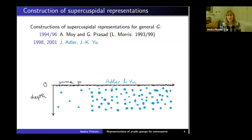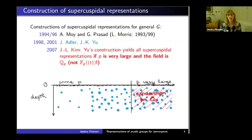People are interested in knowing when Yu's construction provides us all representations. Then we can prove results about Yu's representations, which have a nice recipe to write them down. Ju-Lee Kim proved that if the prime is very large, then we get all representations from Yu's construction.